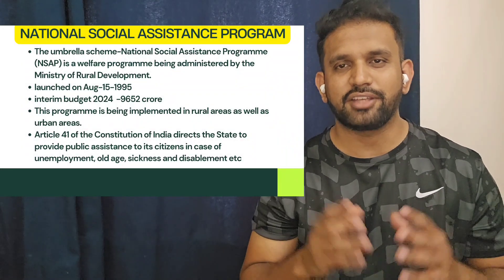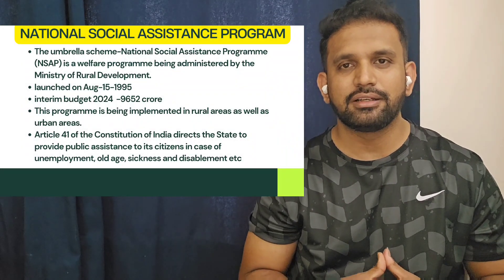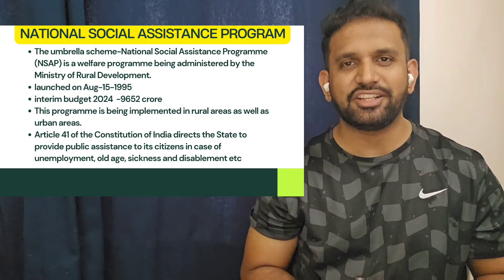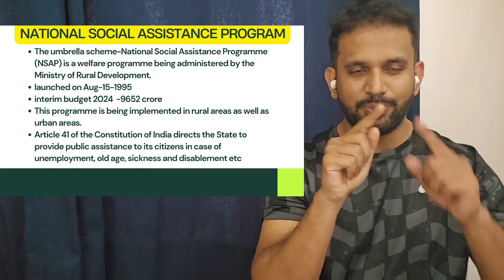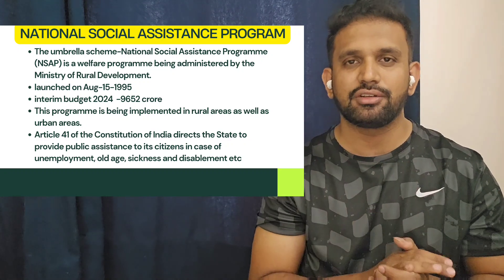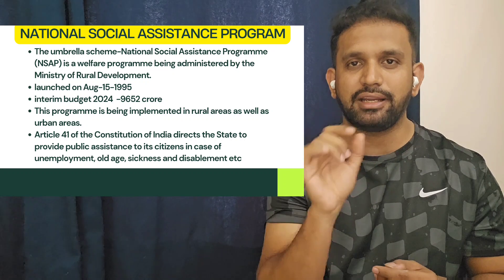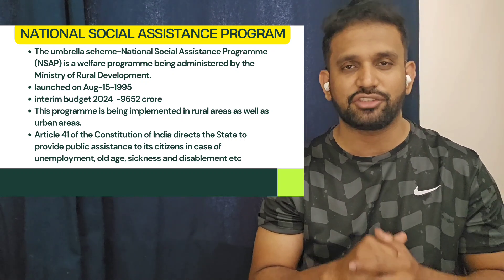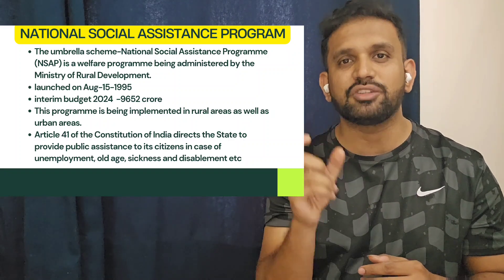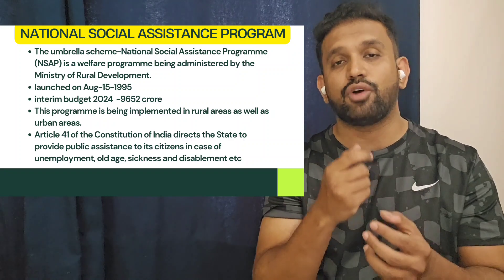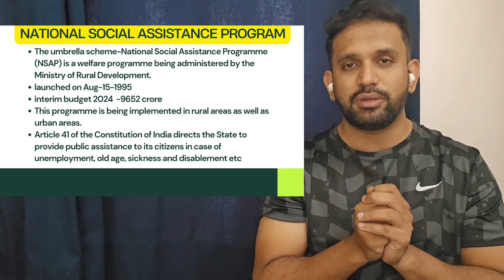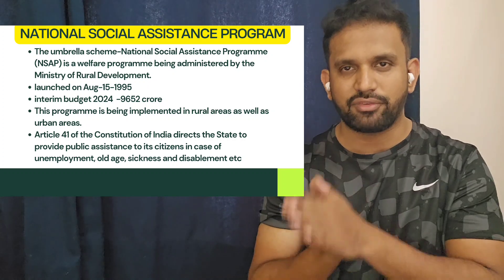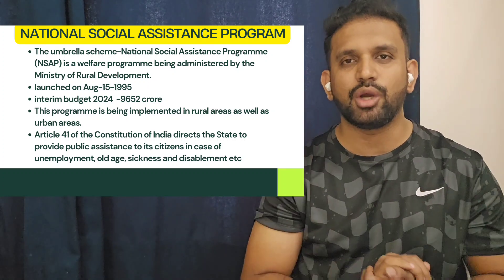Hello everyone. Today in the scheme series we are learning about the National Social Assistance Programme. With the name itself it is very clear: national means it is applicable across the nation; social means it is for the weaker and disadvantaged sections of society; and assistance means the government will give assistance in the form of monetary or non-monetary — cash or kind. Programme is nothing but a government initiative.